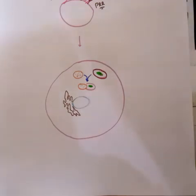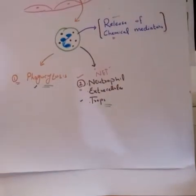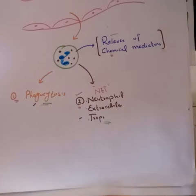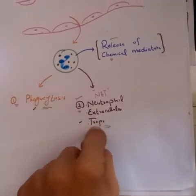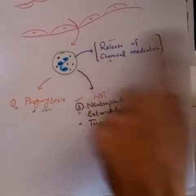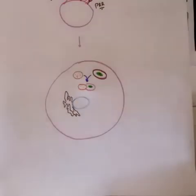Welcome. In the previous video we talked about different roles of neutrophils when they reach the site of infection: phagocytosis and the release of neutrophil extracellular traps. In today's video we will talk about the release of chemical mediators and the functions of different types of chemical mediators.